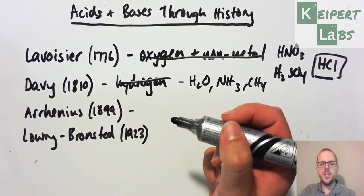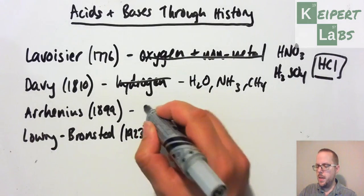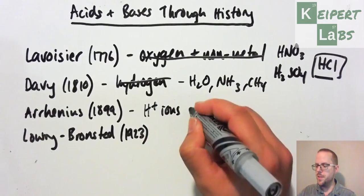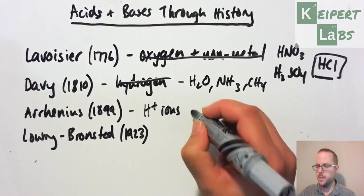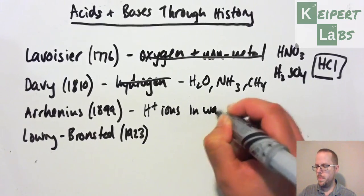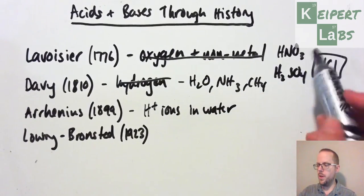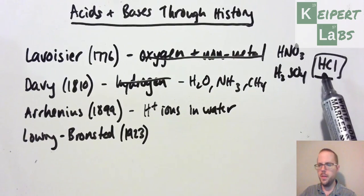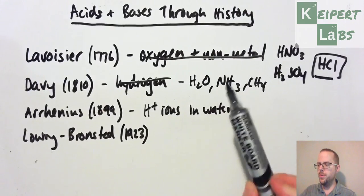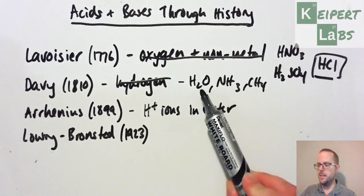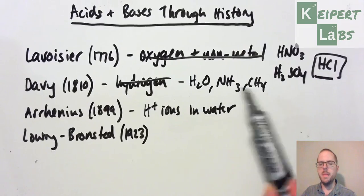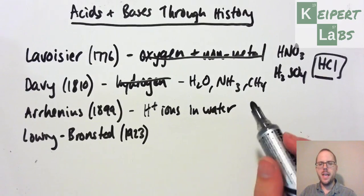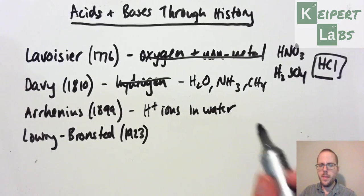So then we get to Arrhenius. He proposed that an acid is a substance that produces hydrogen ions, H plus ions, in water. So that works for all of our much more common acids that we're much more familiar with. And it also helps to exclude the water, ammonia, and methane, these examples that we've talked about here, because they don't do this.